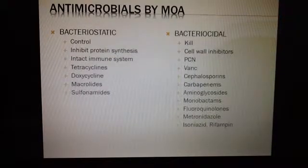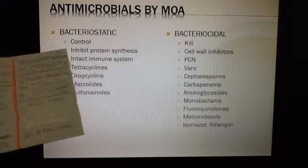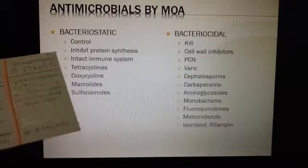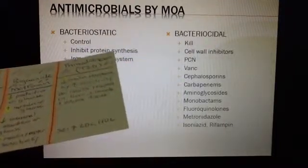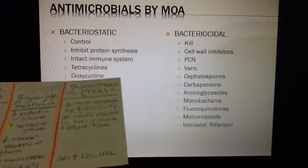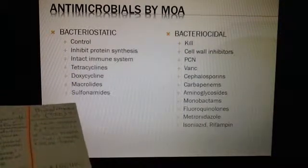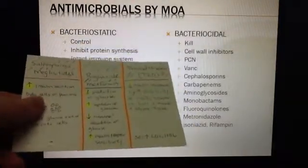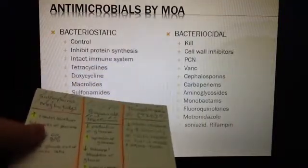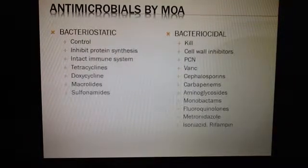We need to back up a little bit and think about which of these drugs are bacteriostatic and which ones are bactericidal. Bacteriostatic drugs allow the body's immune system to take over — they're just inhibiting protein synthesis, not killing the bacteria completely. For those with an intact immune system, you might use tetracyclines, doxycycline, macrolides, or the sulfur drugs. But for those who may have a compromised immune system, you would consider using penicillins, vancomycin, cephalosporins, carbapenems, aminoglycosides, monobactams, fluoroquinolones, or metronidazole. For TB, for example, you'd use isoniazid and rifampin.